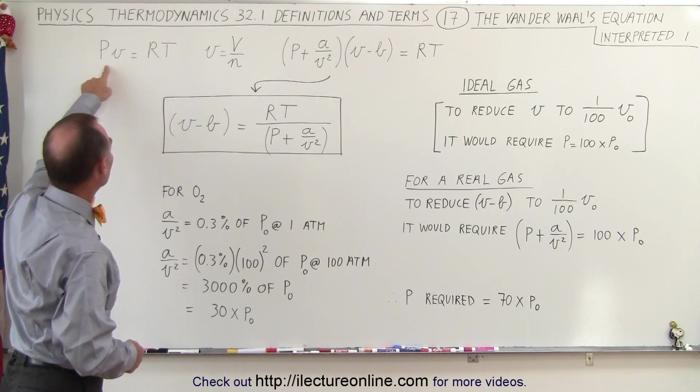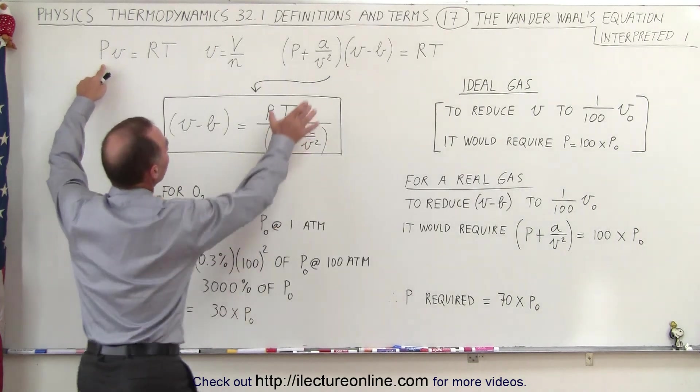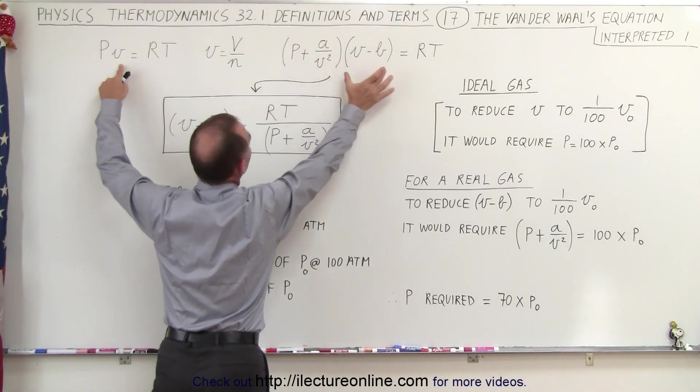then we have the ideal equation written as pv̄ = RT. And of course, the Van der Waals equation replaces p by this and replaces v̄ by this.